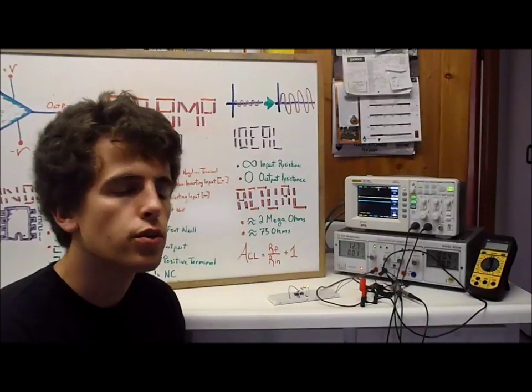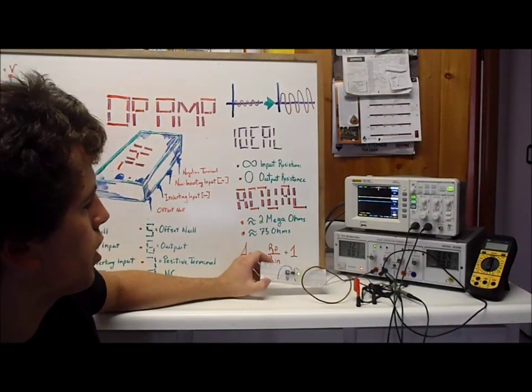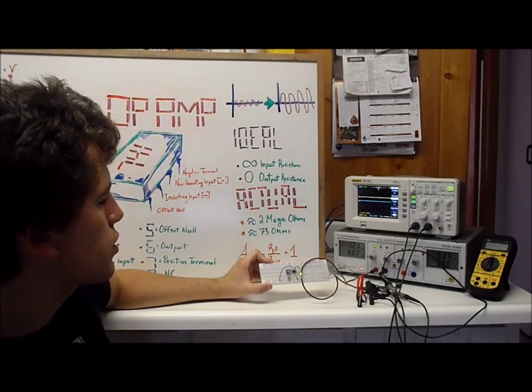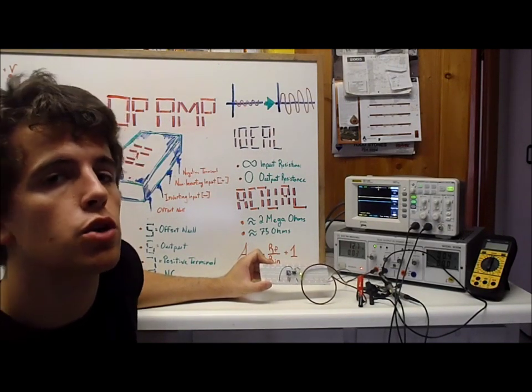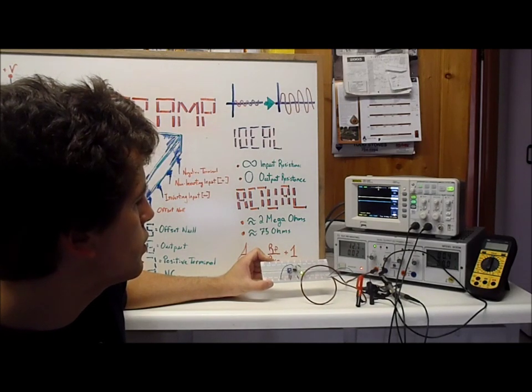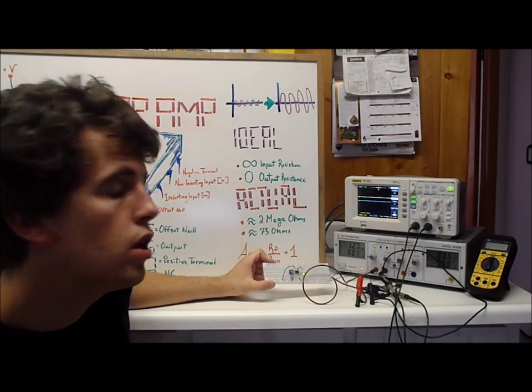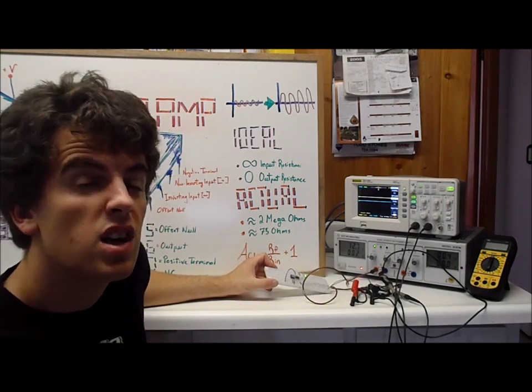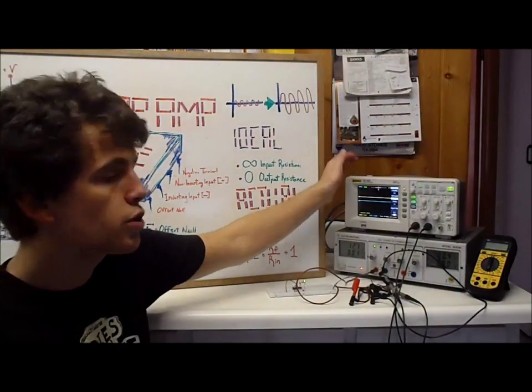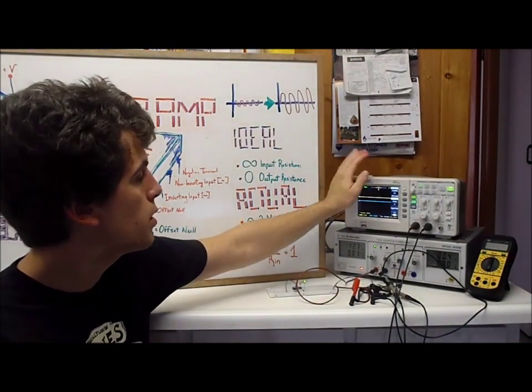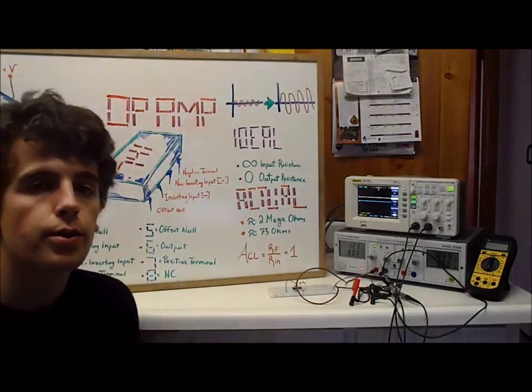Right now what I want to do is show you what an op amp circuit can actually do practically. I've constructed a non-inverting amplifier which I'll go into my next video. This is going to allow us to control the voltage going into the LED, so we can make it brighter or dim depending on the signal going into it. I'll be able to show you both the input and output signal of the actual amplifier by using the oscilloscope.